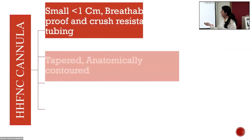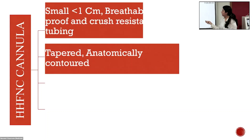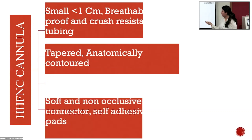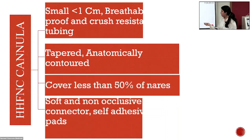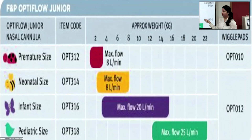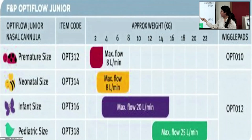The HFNC cannula is small, breathable, crush-resistant tubing. It is tapered and anatomically contoured, with soft self-adhesive wiggly pads attached to it. As mentioned, it should cover less than 50% of the nares. The Fisher & Paykel Optiflow Junior is the neonatal interface we use, available in various color-coded sizes. The maximum flow we can provide is eight liters per minute. The premature neonatal sizes are red and yellow as shown in the picture.